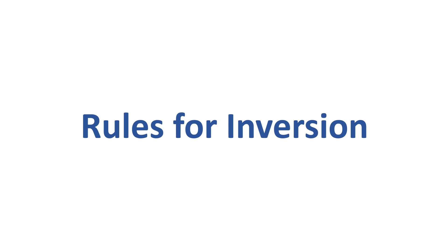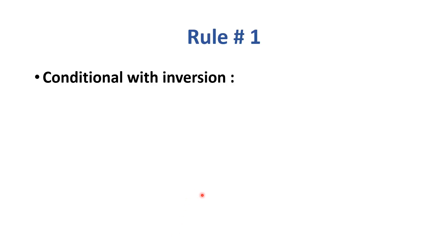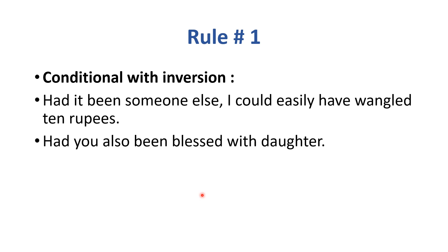Now, rule number one — we will discuss it. Rule number one involves the conditional sentence, specifically the third condition. These are examples where you have inverted the third conditional structure. I am going to tell you the general concept of what you need to do.